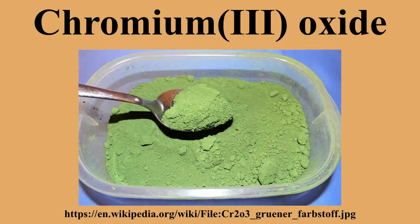Chromium oxide is the inorganic compound with the formula Cr2O3. It is one of the principal oxides of chromium and is used as a pigment. In nature, it occurs as the rare mineral eskolaite. Cr2O3 adopts the corundum structure, consisting of a hexagonal close-packed array of oxide anions with two-thirds of the octahedral holes occupied by chromium.